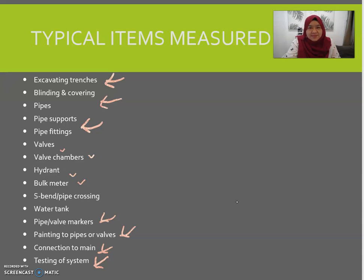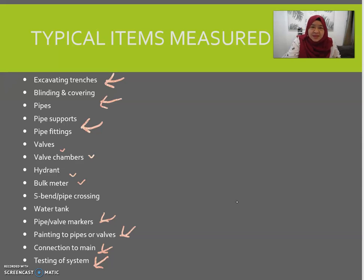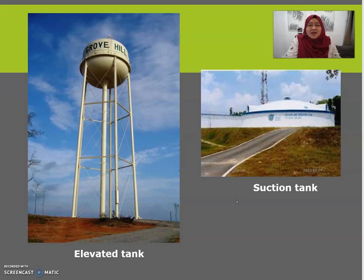At this point you should already be familiar with Section V of your SMM. When I say V.1, that refers to items generally; V.2 is on excavation; V.3 is on disposal of water; V.4 is on bedding and covering; V.5 is about pipe works and related works. Also note that elevated tanks and suction tanks will normally be measured differently under ancillary buildings.